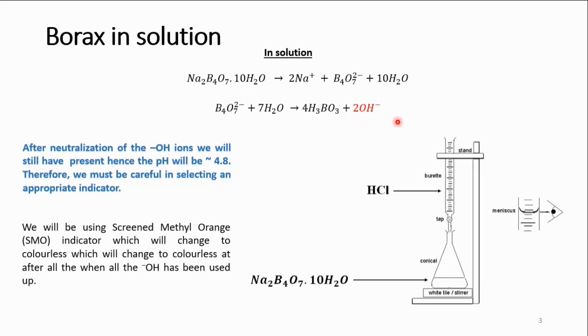And so if we should titrate a solution of borax with hydrochloric acid, and if we don't know the concentration of the hydrochloric acid, once you know the amount of borax or the number of moles of borax that we are working with, and hence the number of moles of hydroxide ions, you could figure out the number of moles of hydrochloric acid in the titer volume.